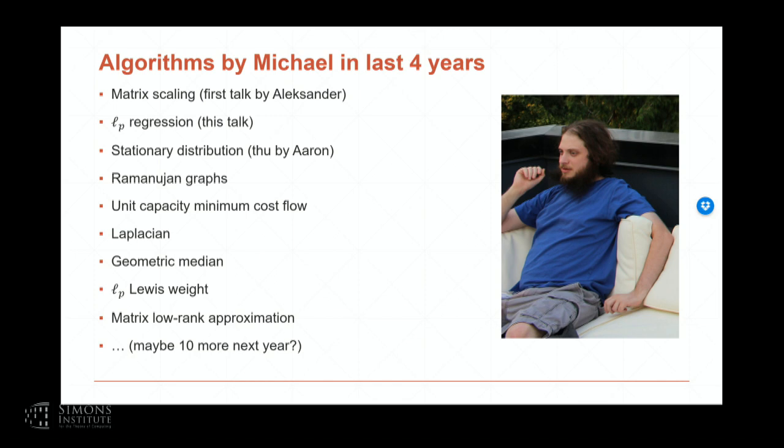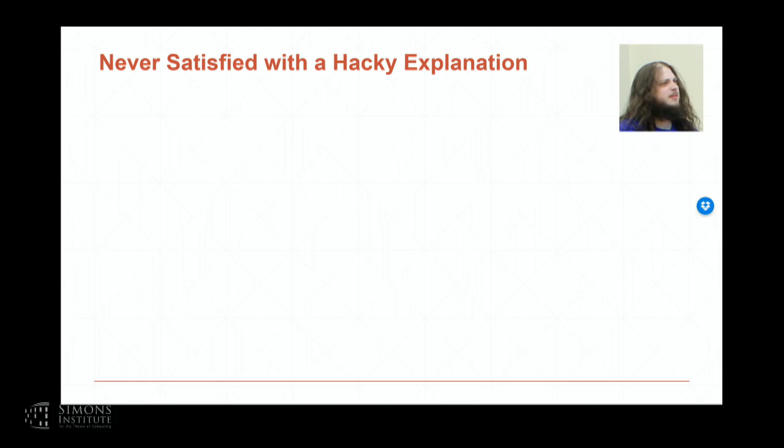He has many fundamental works just in three years. He got the first polynomial time construction on Ramanujan graphs. This problem has been studied by many mathematicians and computer scientists for many decades. He worked with Alex and Phil and got faster algorithms for unit capacity min cost flow. He has the current record for the fastest algorithm for solving Laplacian and many other problems.